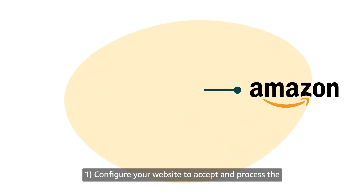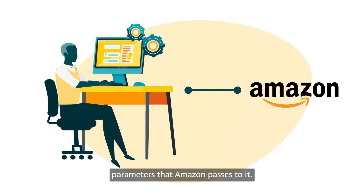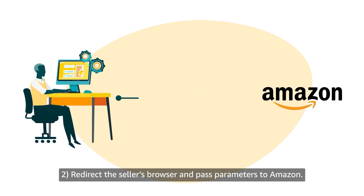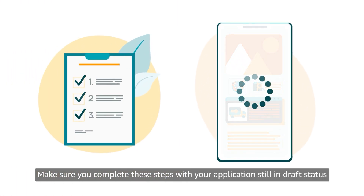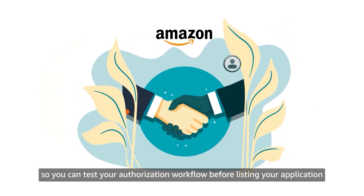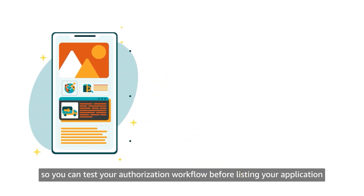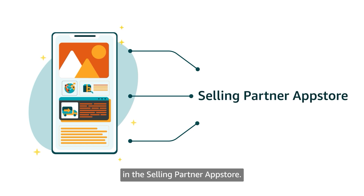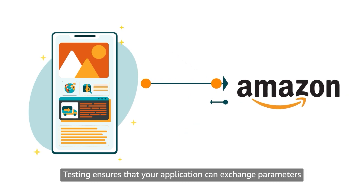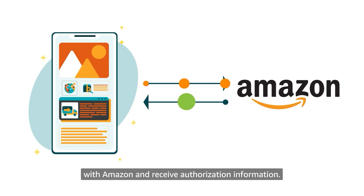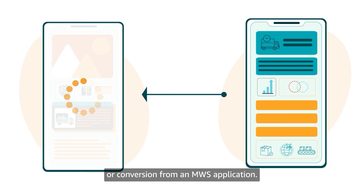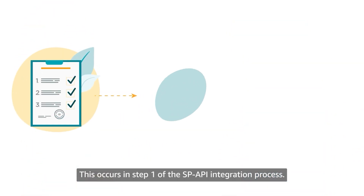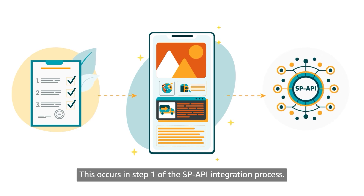Make sure you complete these steps with your application still in Draft status so you can test your authorization workflow before listing your application in the Selling Partner App Store. Testing ensures that your application can exchange parameters with Amazon and receive authorization information. As a reminder, your application will be in Draft status after registration or conversion from an MWS application — this occurs in Step 1 of the SP API integration process.